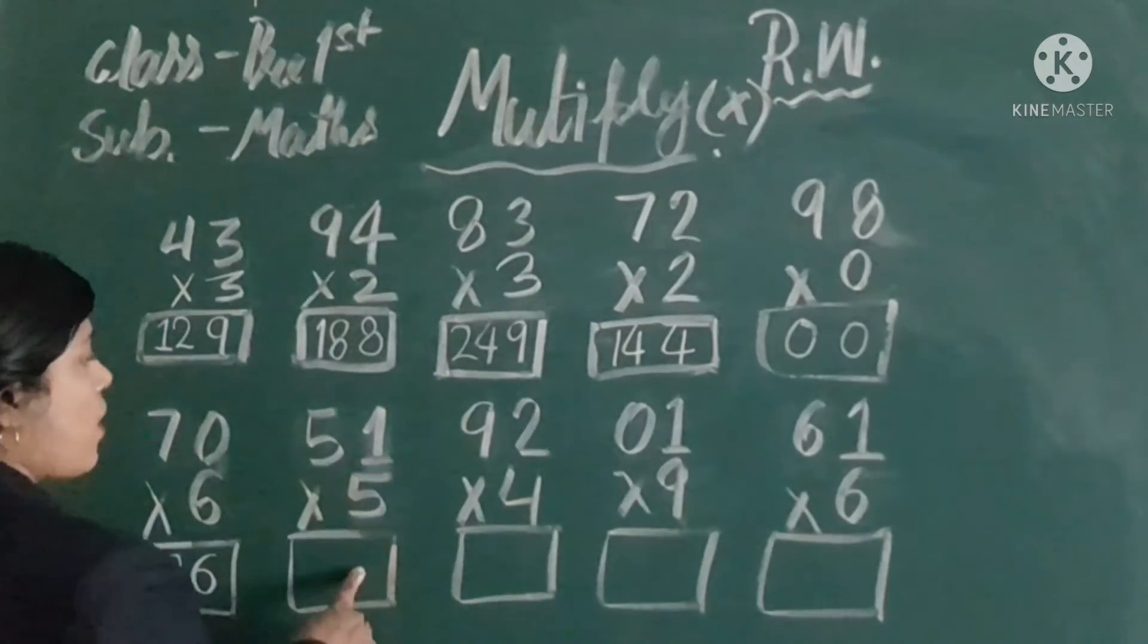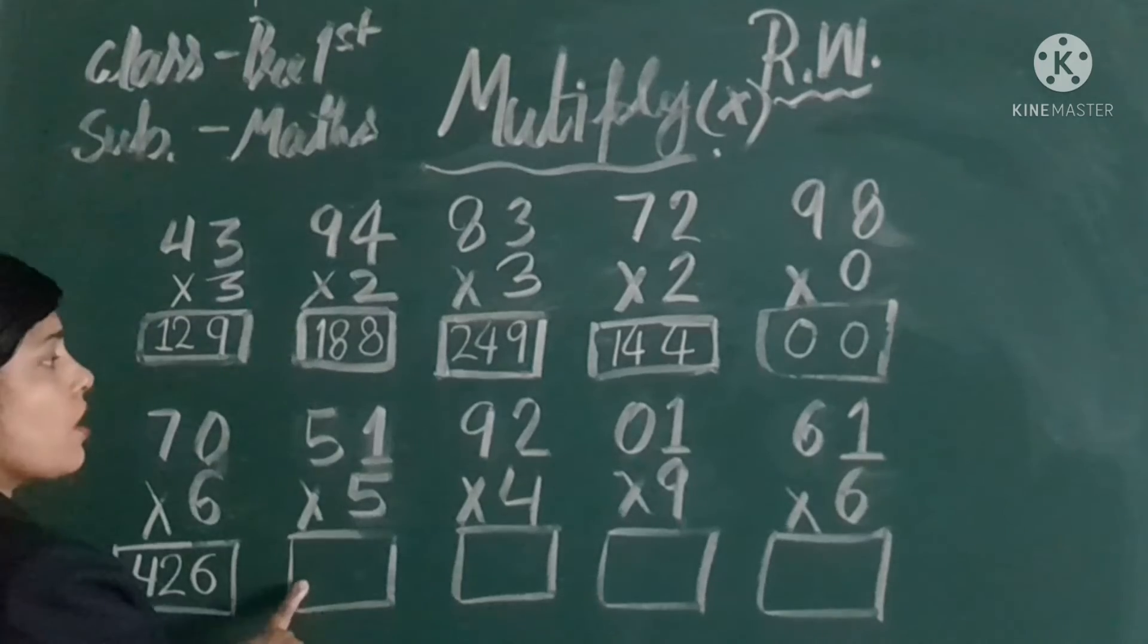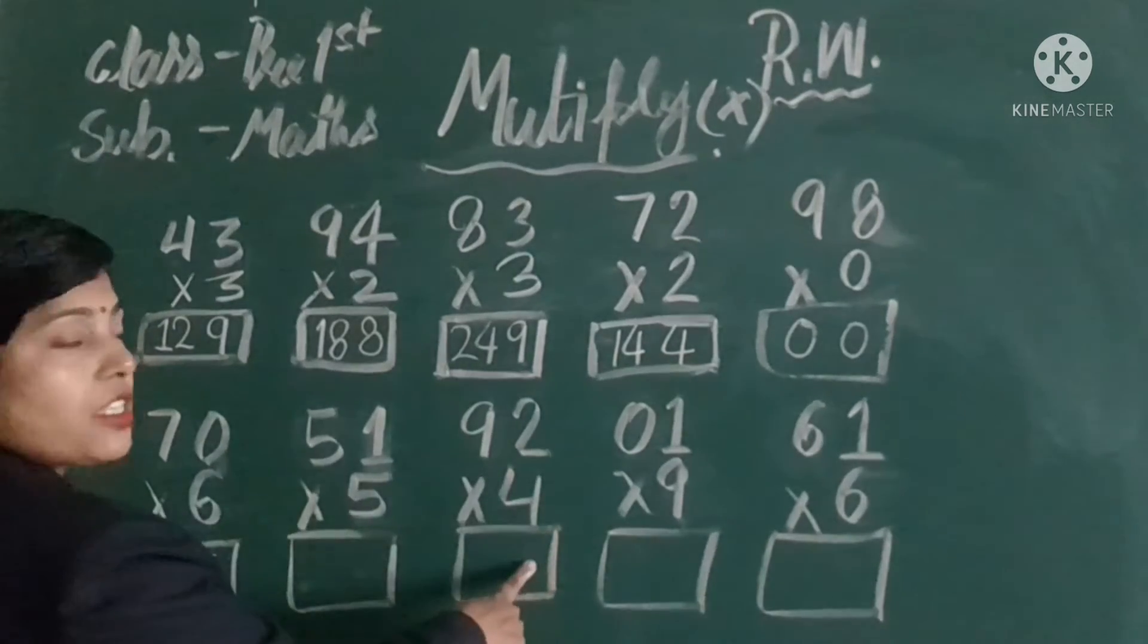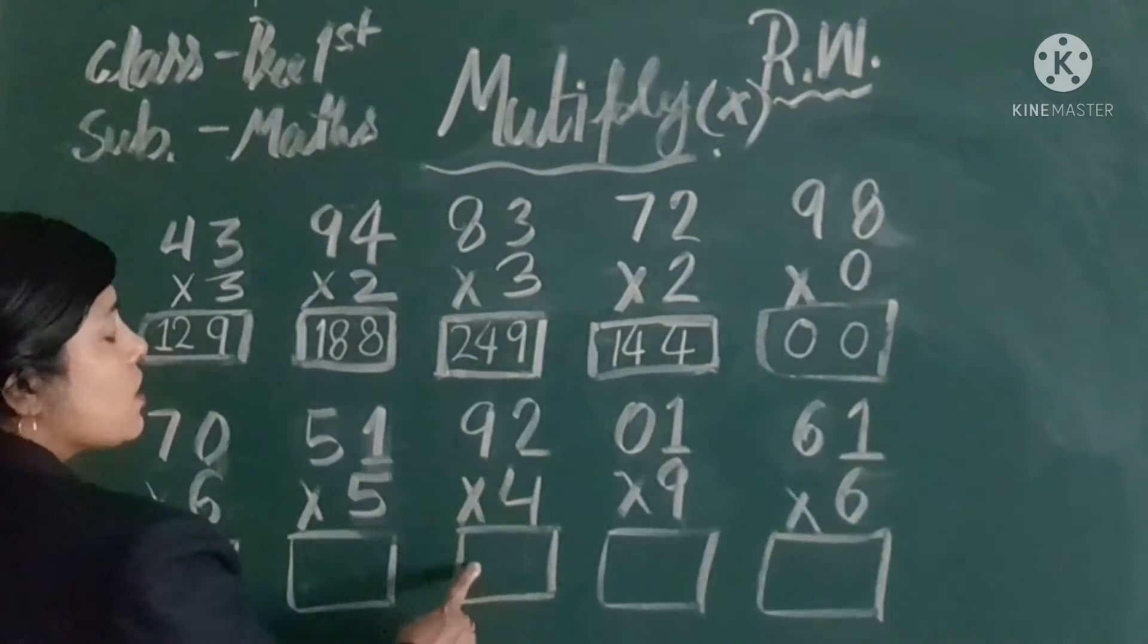5, 1's are 5, 5, 5, 5's are 25. 4, 2's are 8 and 9, 4's are 36.